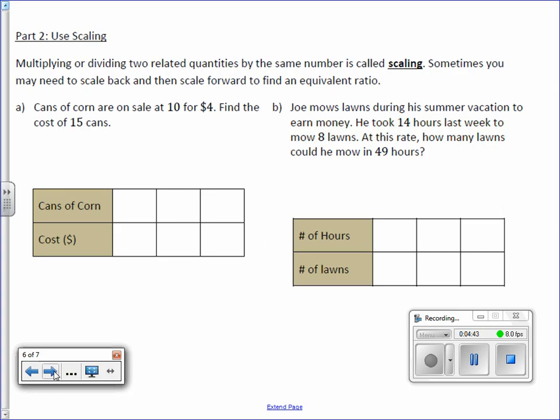Cans of corn are on sale at 10 for $4. So 10 cans of corn for $4. Find the cost of 15 cans. What I want you to do now is use the last column, 15.